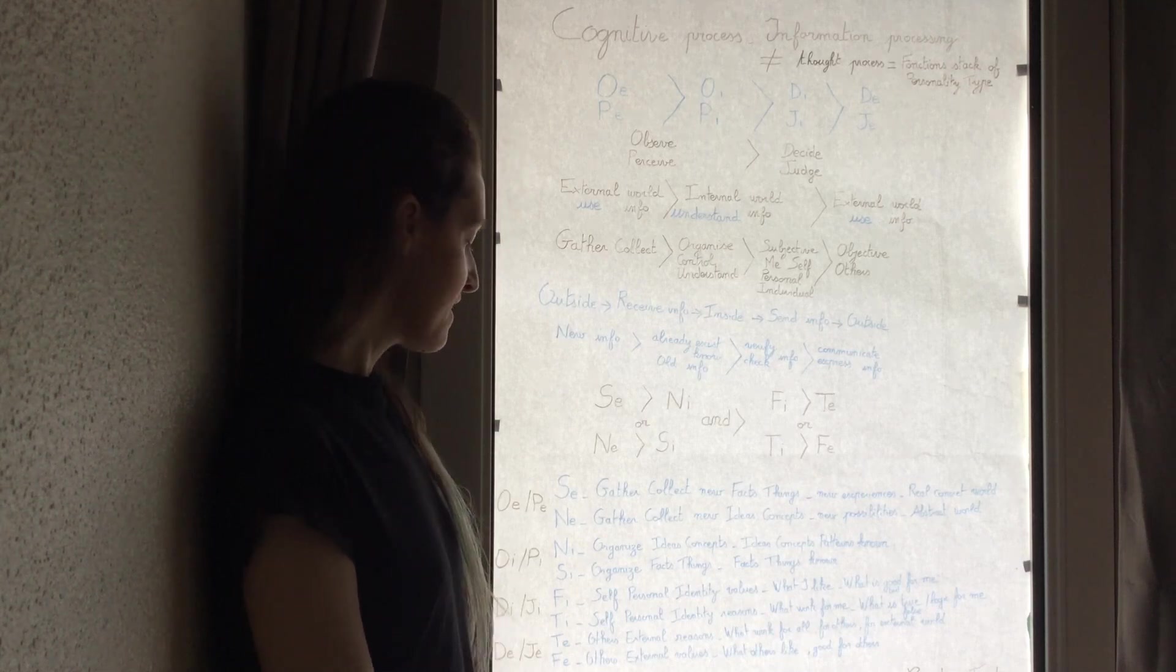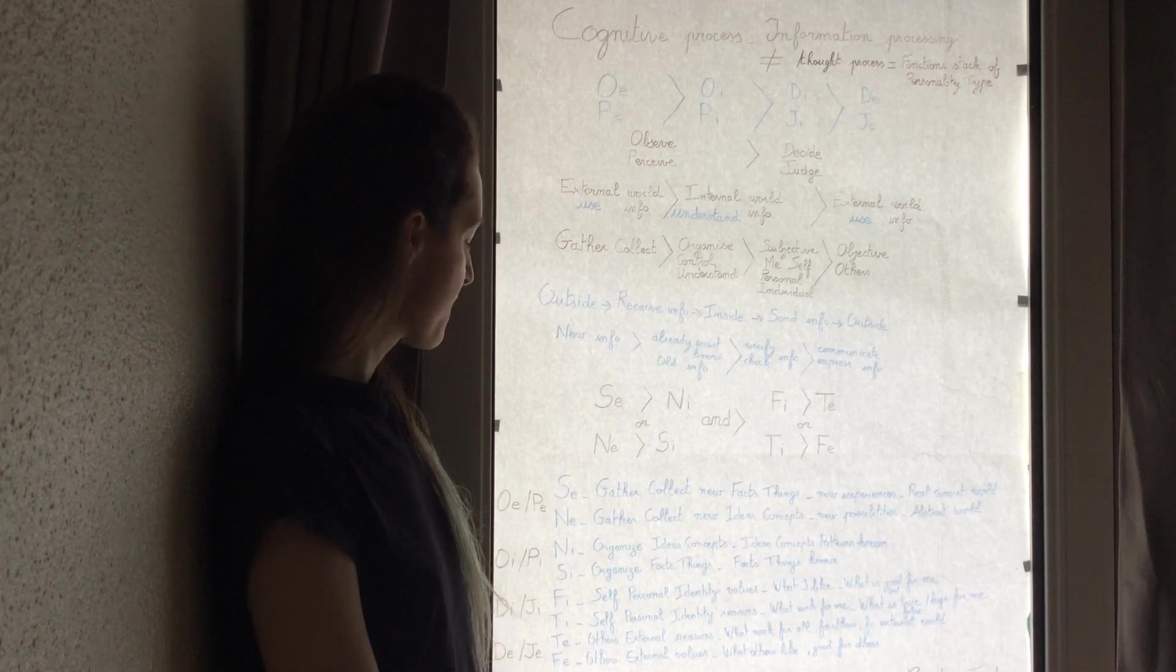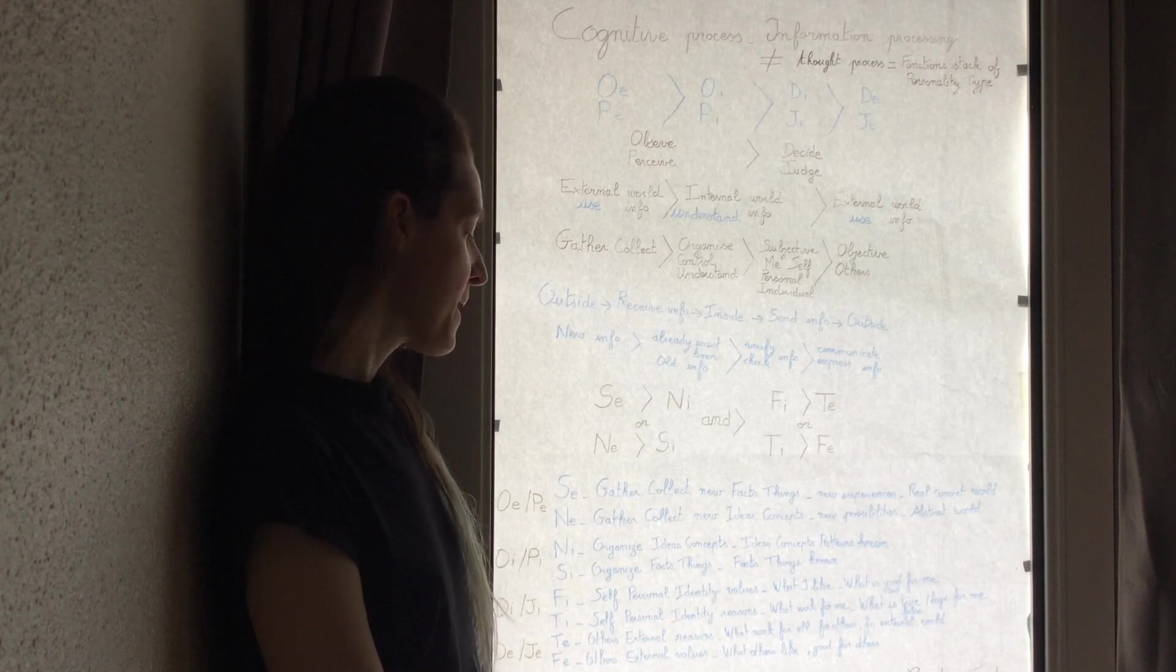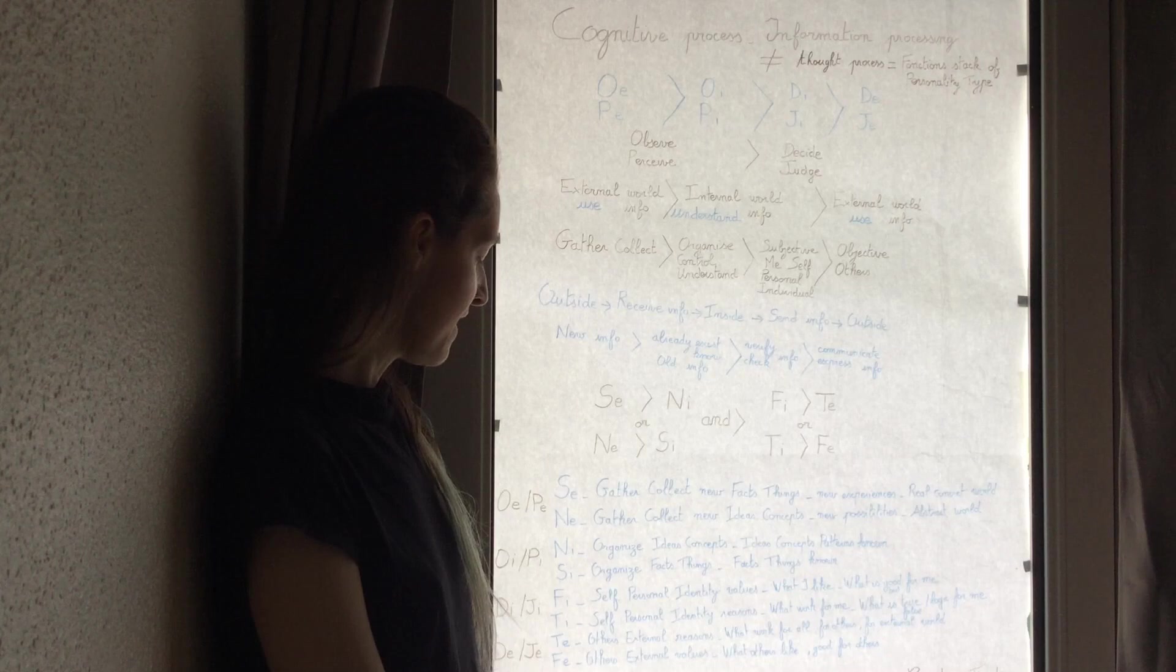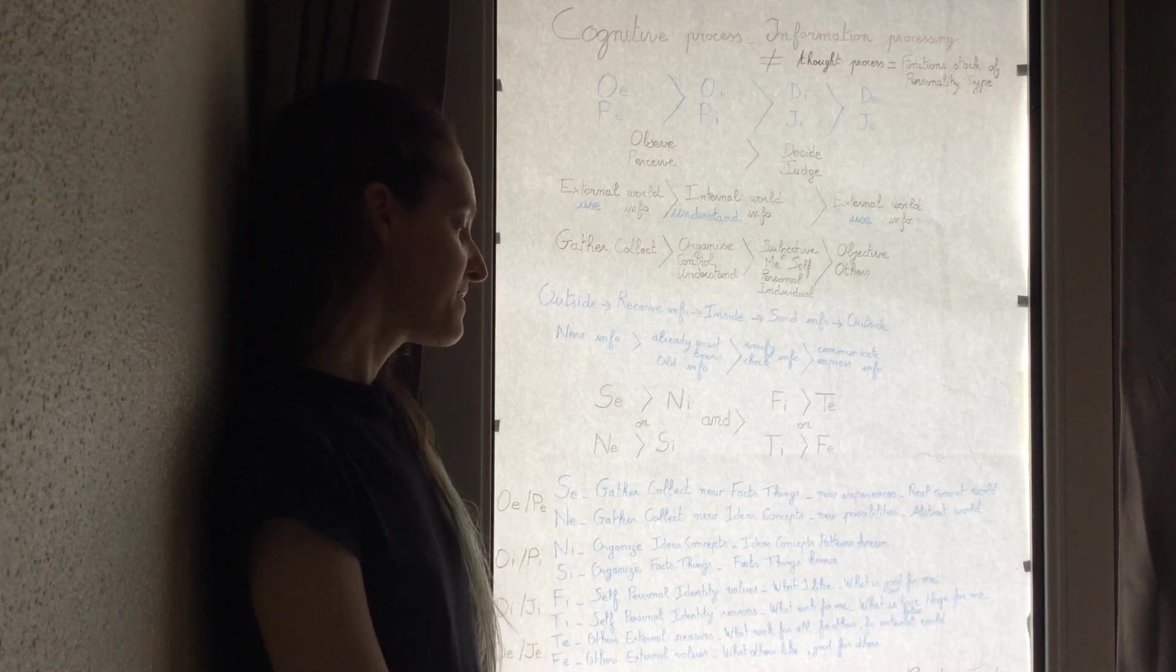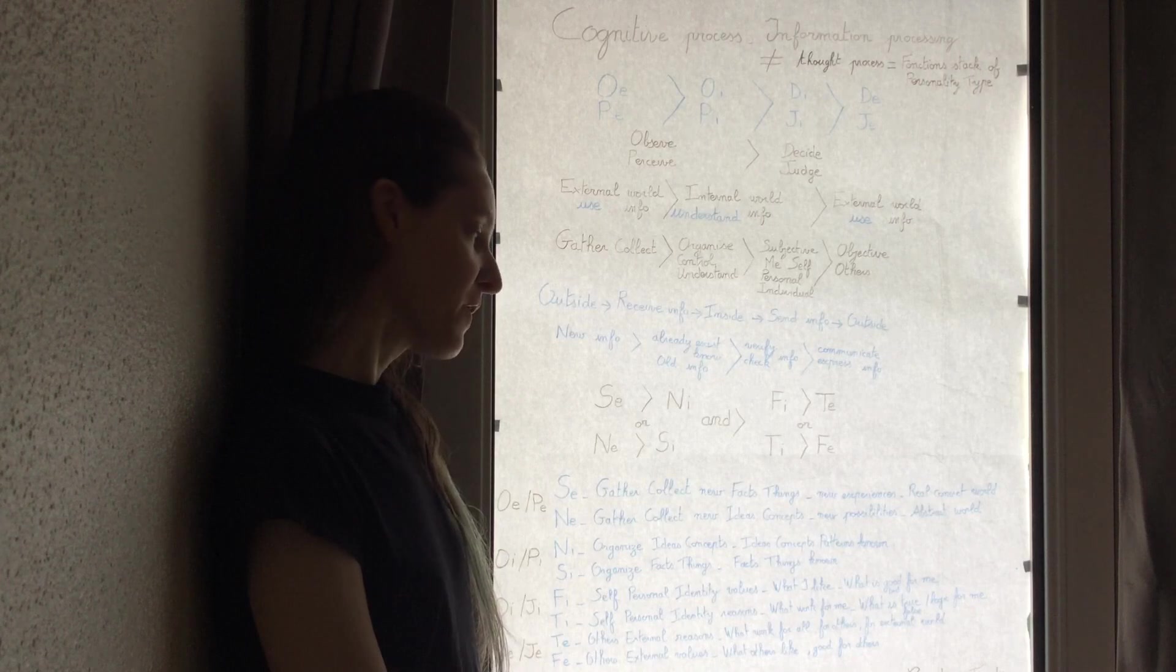The deciding, judging introverted function, Fi, is self-personal identity and values—what I like, what is good or bad for me. Ti is self-identity—what works for me, what is true or false logic for me.